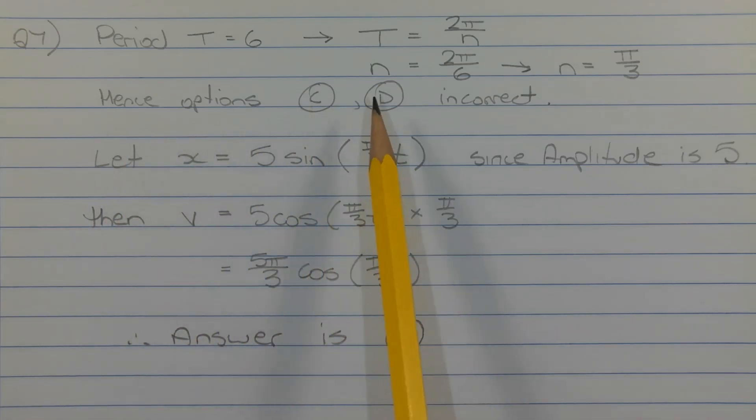Hence options C and D are incorrect. At this stage, if we need to guess an answer, we have a 50% chance of getting it right.